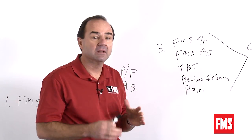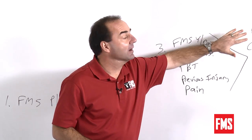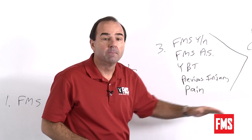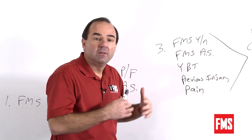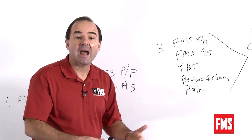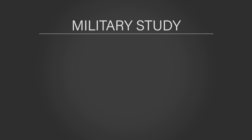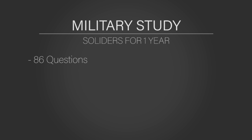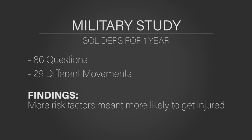We were able to take athletes and categorize them as high risk versus low risk. We then took that same concept out to a large military study, looking at soldiers prospectively for one year. We looked at 86 different questions and 29 different movements, so we had a lot of variables, and what we found was the more risk factors you had, the more likely you were to be injured.